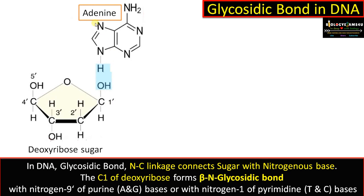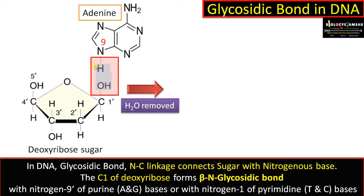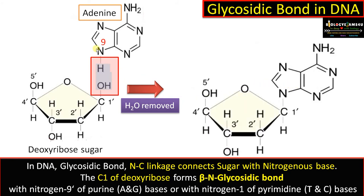This is the purine adenine. At the N9 position there is a hydrogen. So the OH at the C1 position of the deoxyribose sugar reacts with the hydrogen at the N9 position of adenine, releasing a water molecule — H2O is removed. Now we have an N-C linkage which is called the glycosidic bond.